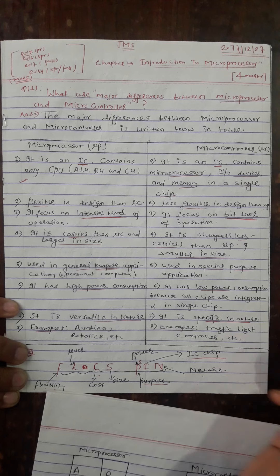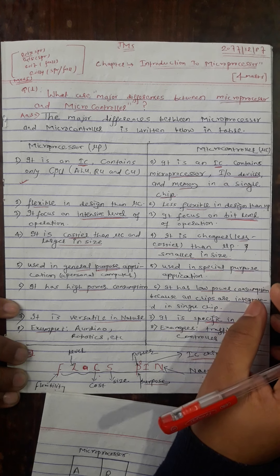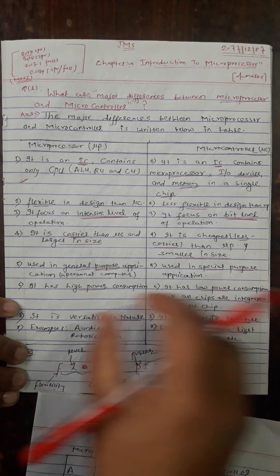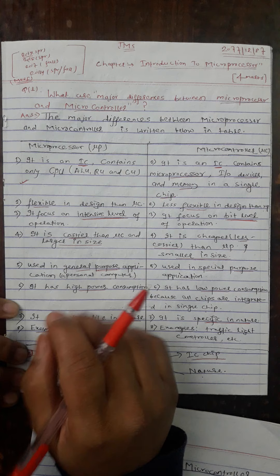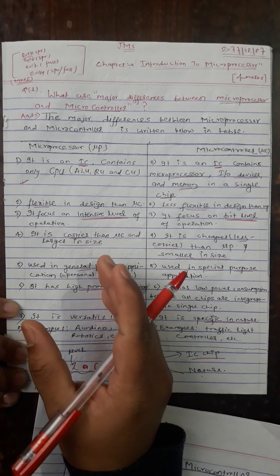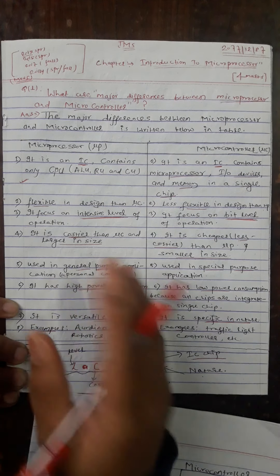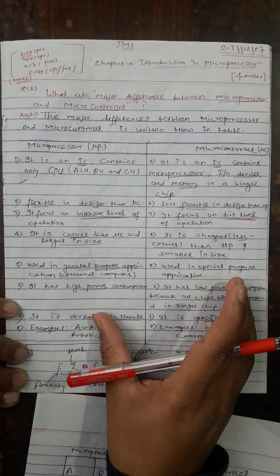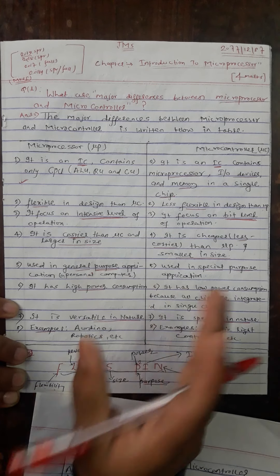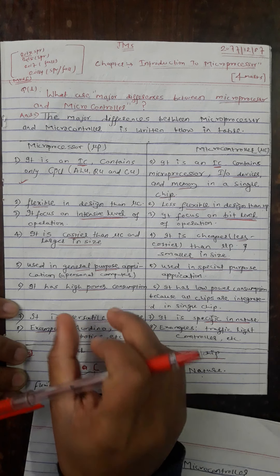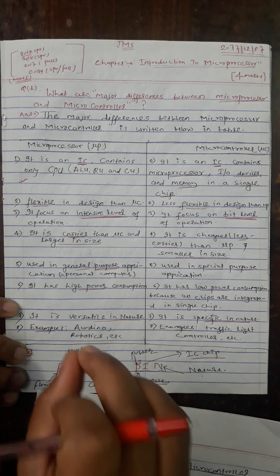Regarding clock speed, a microprocessor has a faster clock speed than a microcontroller.